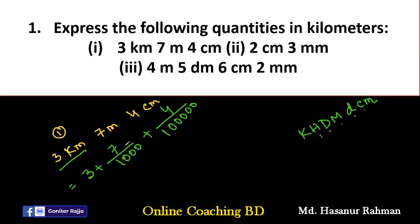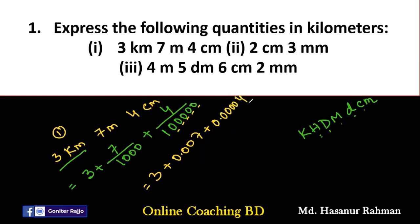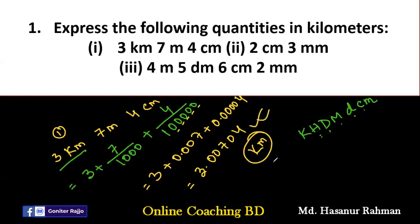Converting the fractions to decimals: seven divided by one thousand equals 0.007, and four divided by one hundred thousand equals 0.00004. Adding everything together: three plus 0.007 plus 0.00004 gives the final answer of 3.00704 kilometers.